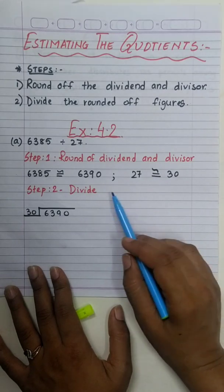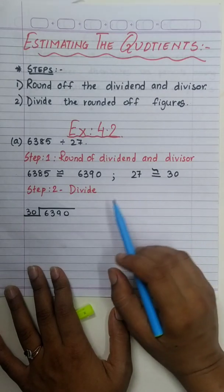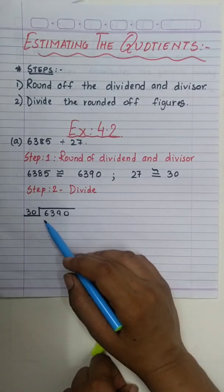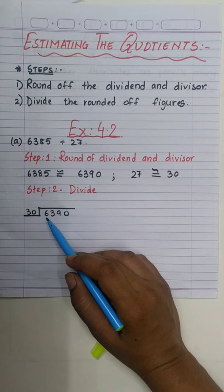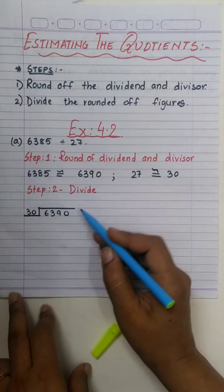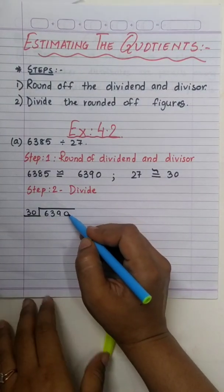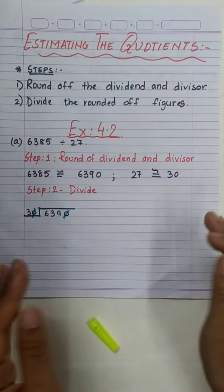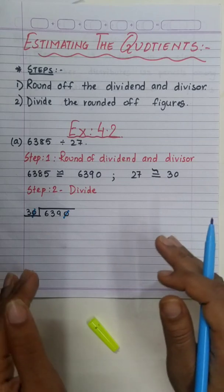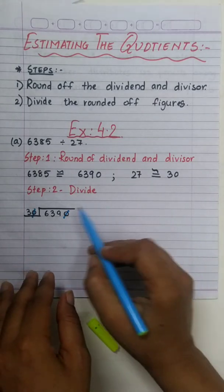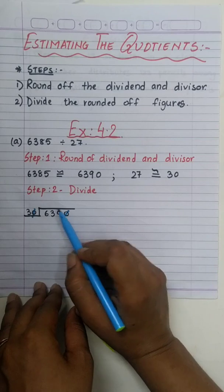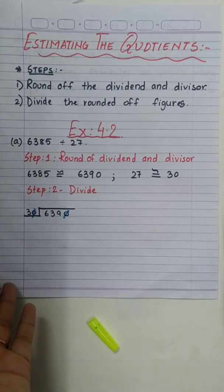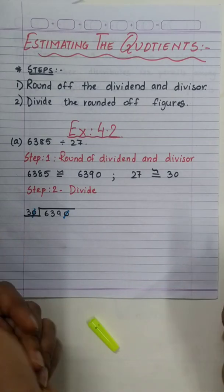Step 2 is divide the rounded-off figures. So we will divide 6,390 by 30. That's so easy. When the last digits are 0, we can cut off the zeros. Now we just have to divide 639 by 3, so the numbers become small and the division will be quick.